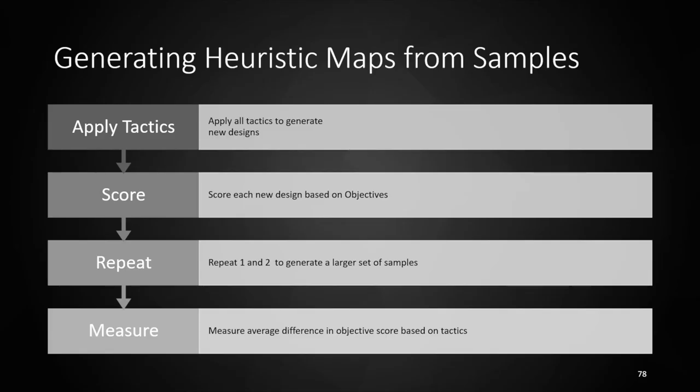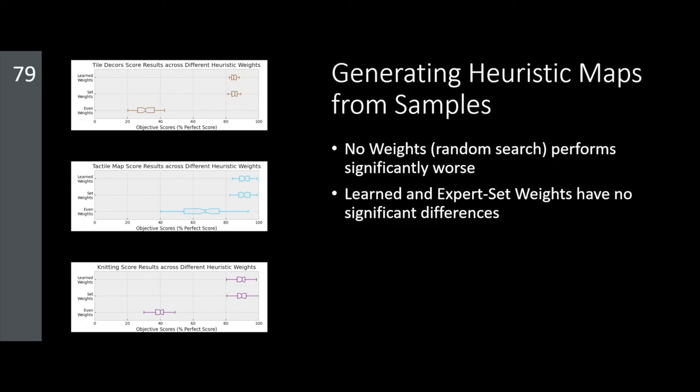The question for folks on Zoom was: how does a user go about assigning those weights? We have a GUI for this, so that's the first step — the designer can just kind of choose from this. But we can also generate heuristic maps from sample designs: you score samples using a variety of objectives, and then we have a simple learning process to figure out the weighting between them. In one of our studies, we actually found that the expert-set weights were equivalent to the weights set with the learning process — it's just the learning process takes a long time, like 30 minutes. So we let people choose, and then they can also use this tuning process to automatically do it.